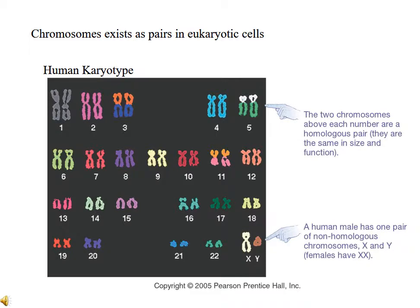Each homologous pair consists of one chromosome that came from the mother and one that came from the father. All of us have every cell in our bodies consisting of 46 chromosomes — 23 pairs — one of each pair having come from our parents. An important point: the human karyotype has an X and a Y chromosome, which means a male. Two X chromosomes would be a female.